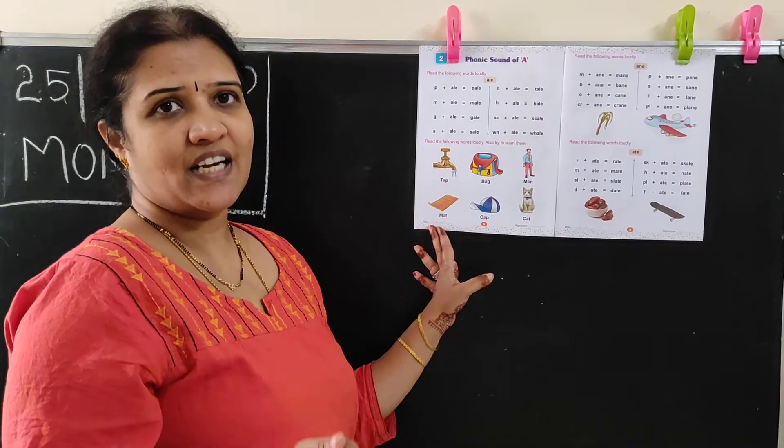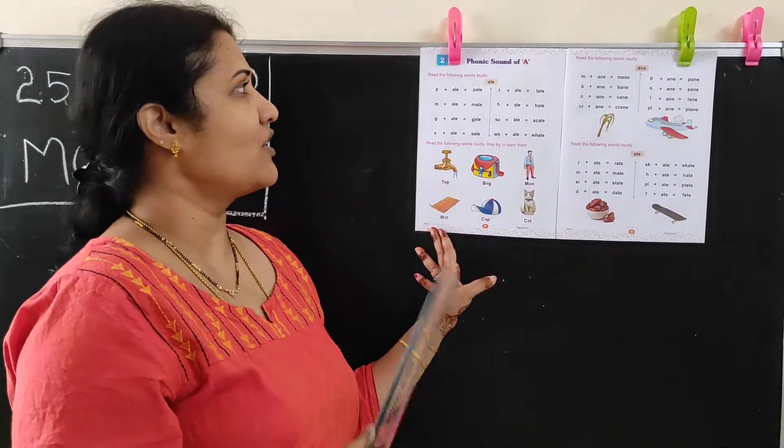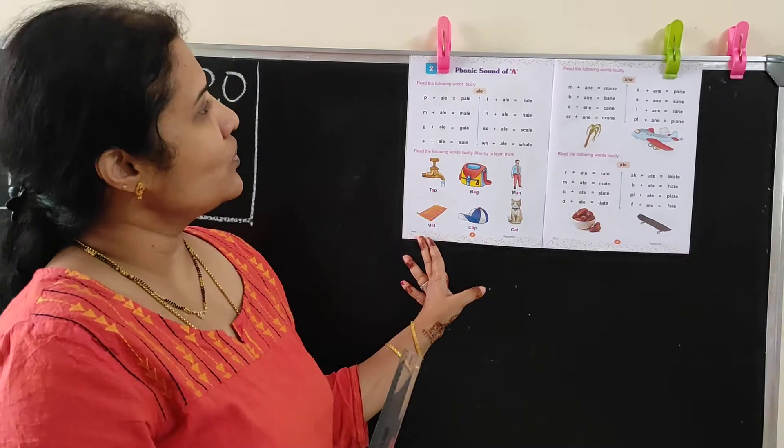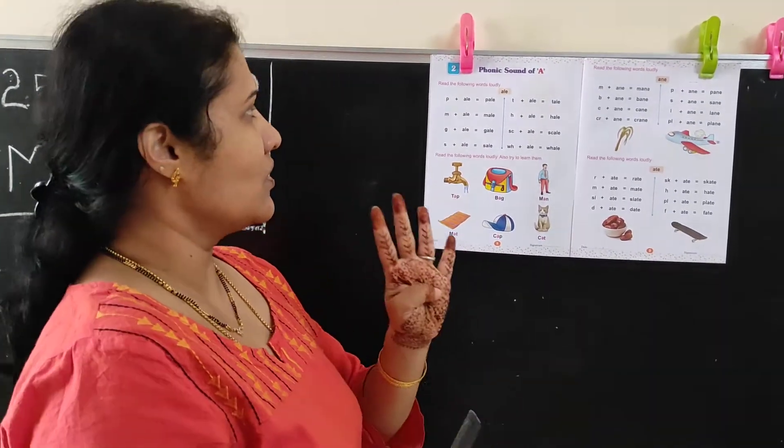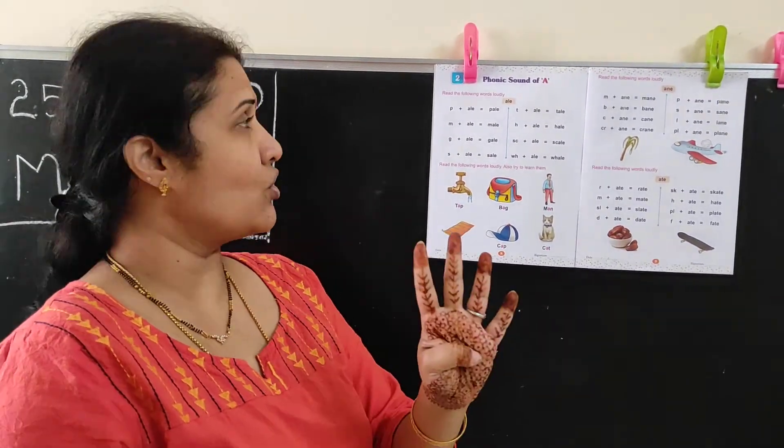Mat, cat, bat, hat, all these, right? Now we are going to learn 4 letter words. How many letters? 4 letter words.